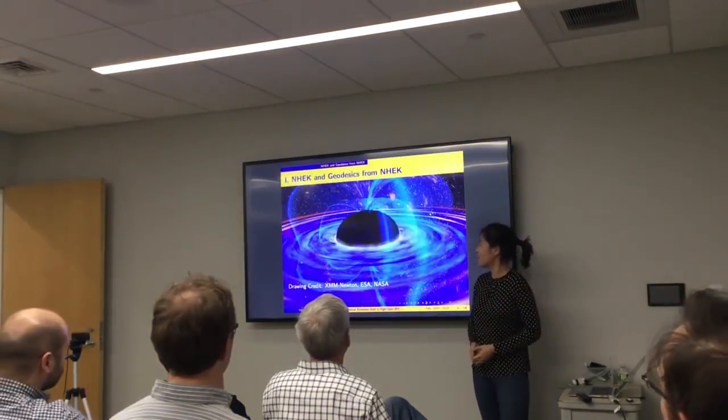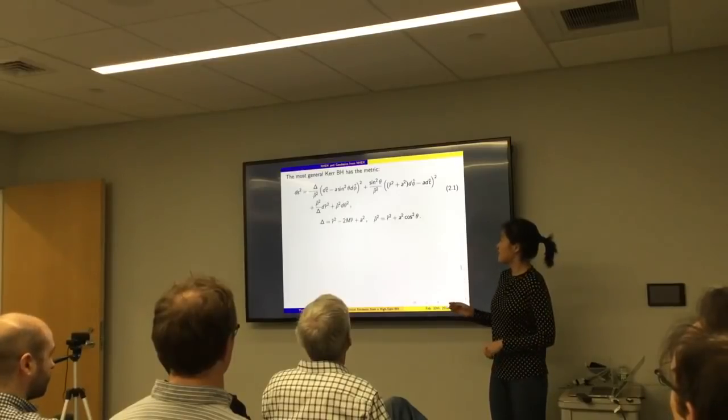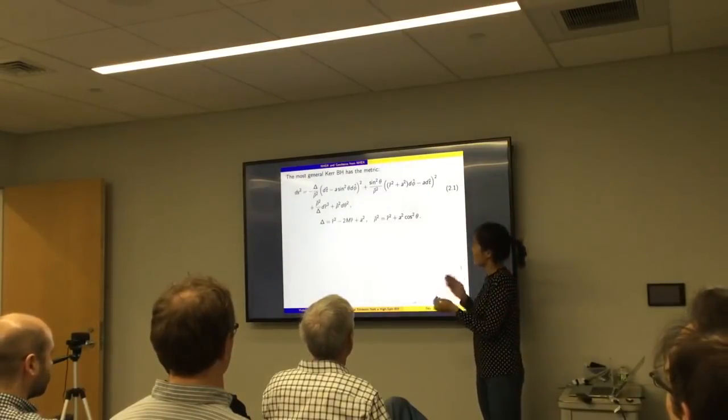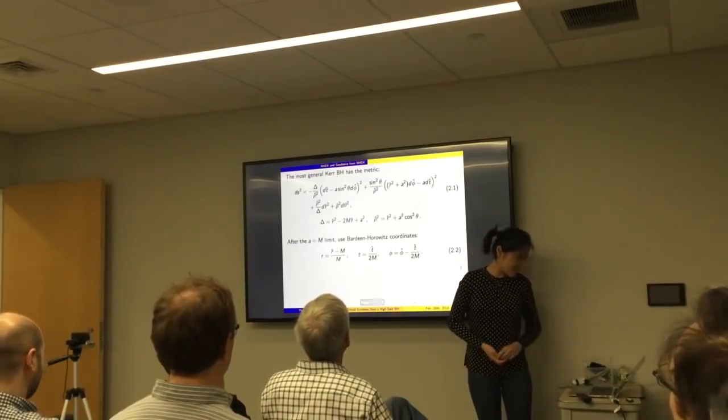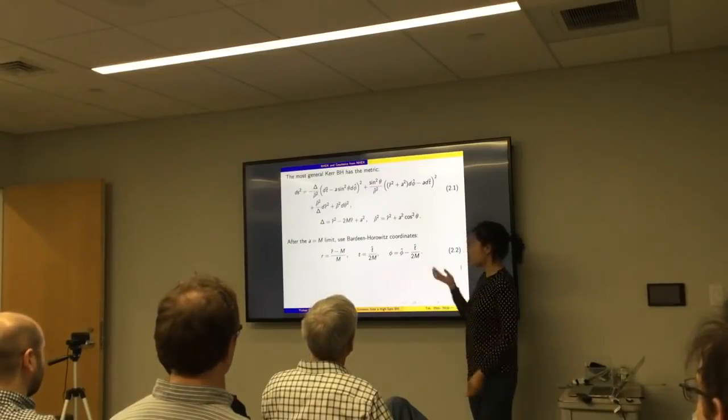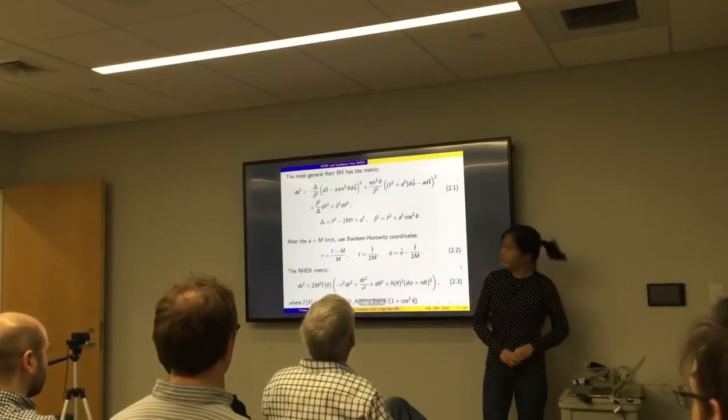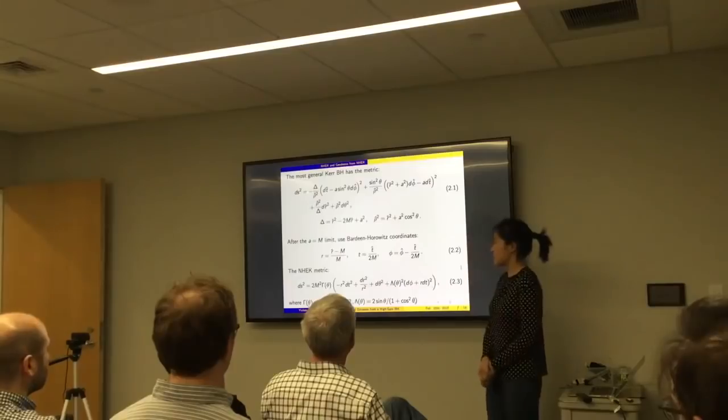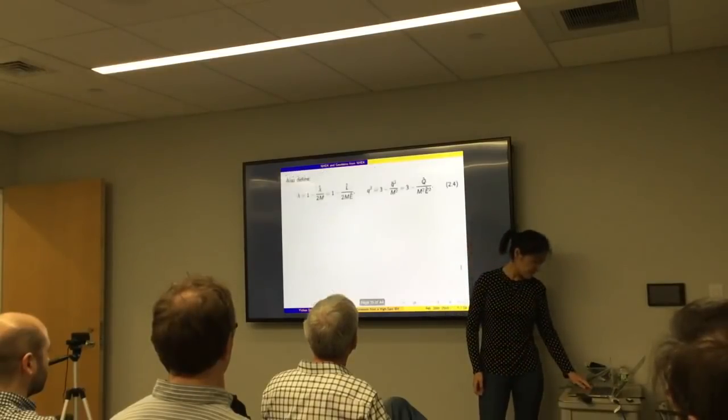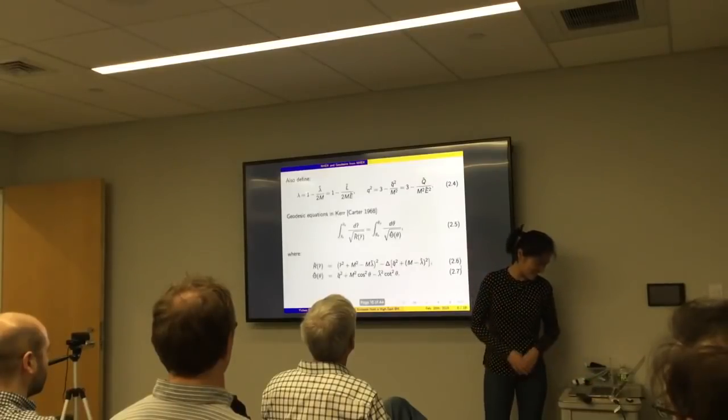I'll start with a brief review of the near-horizon extreme Kerr geometry and the geodesic. In Boyer-Lindquist coordinates, the most general Kerr black hole has a metric given in the form of 2.1. Notice that I'm using hatted coordinates for everything, because later when I deal with neck coordinates, I'll be using unhatted coordinates. We physically simplify life by taking limits. We can take the extreme Kerr limit, a equal to m, and then use Poincare horizon coordinates to zoom onto the horizon. The first r here on the left-hand side is assumed to be small. And when you do that, what you're going to obtain is the neck metric to leading order, given by equation 2.3.